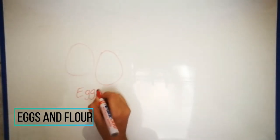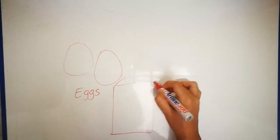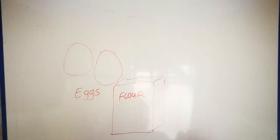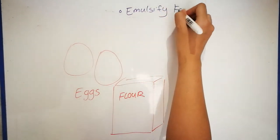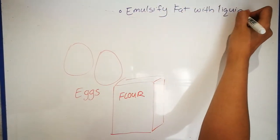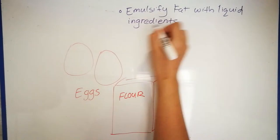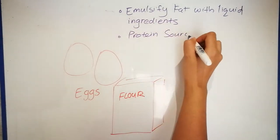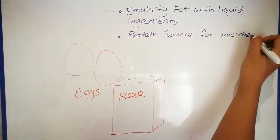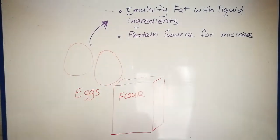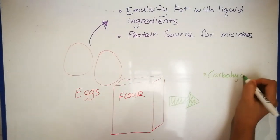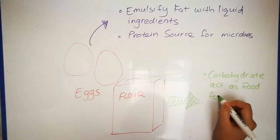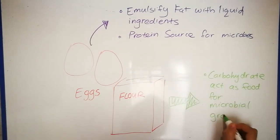Lastly, we have eggs and flour. Eggs can emulsify fat with liquid ingredients. Eggs is also a good protein source for microbes to grow. As for flour, it is rich in carbohydrates. Hence, it can act as a food for microbial growth.